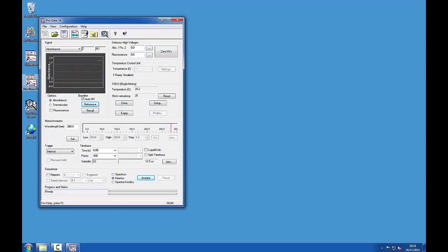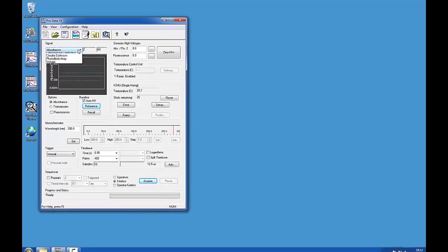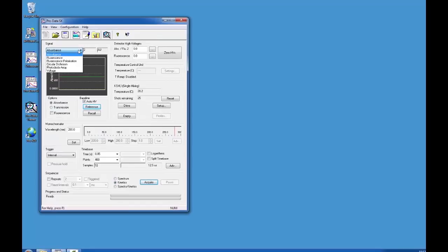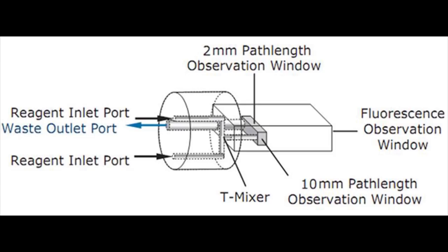We need to select the mode that we will be working in. For this initial example we shall make some absorbance measurements. We therefore want to ensure we have absorbance mode selected in the drop-down menu. We also need to select the path length.